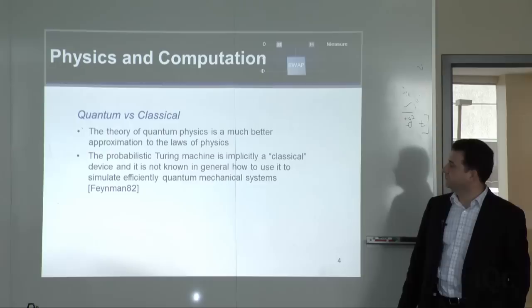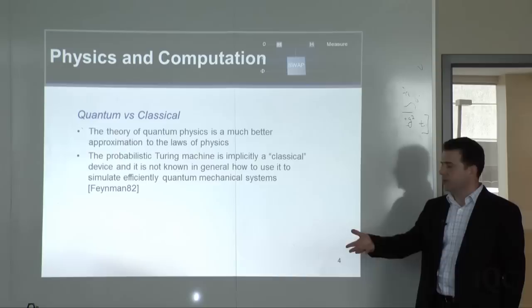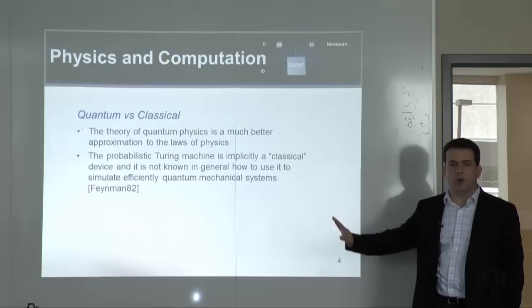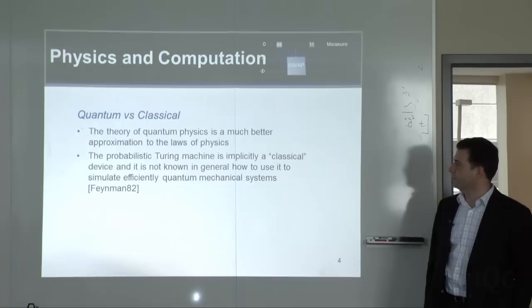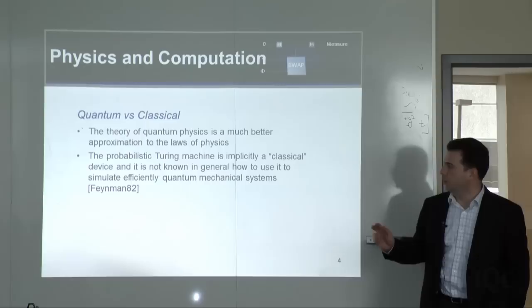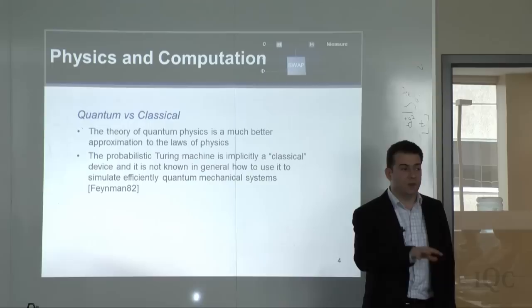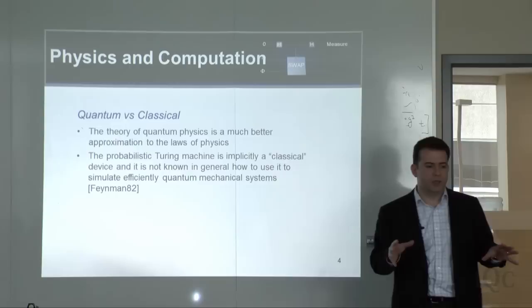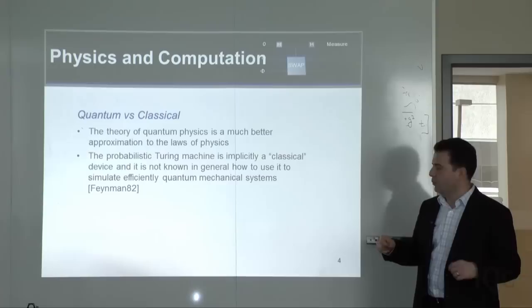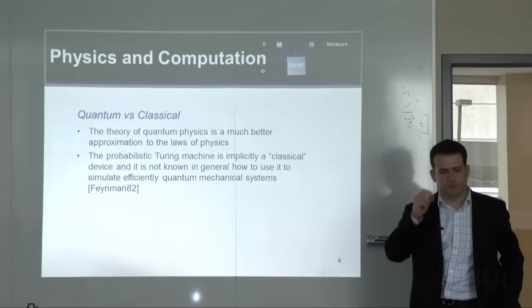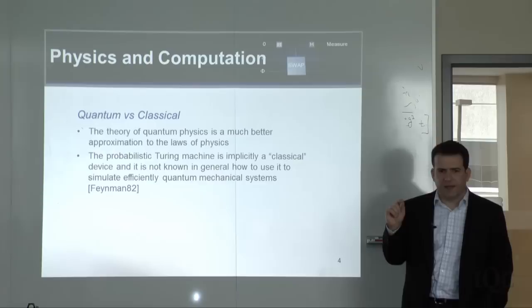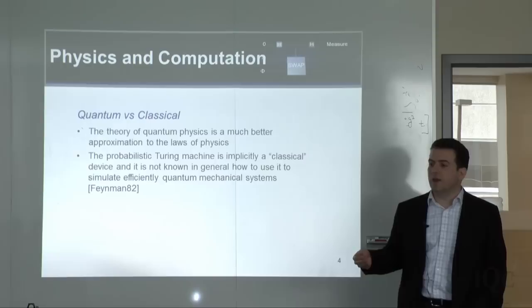Quantum theory gives us a more precise approximation. The computers we use today are essentially probabilistic Turing machines — classical devices. What Feynman and others realized decades ago was that a classical computer is not very good at simulating even simple quantum mechanical systems. Take a hundred spin-1/2 particles evolving according to very simple rules — we don't know how to simulate that efficiently on a probabilistic Turing machine, which starts to violate the intuition behind the strong Church-Turing thesis.